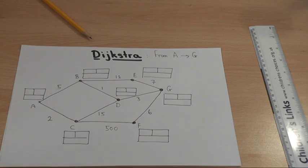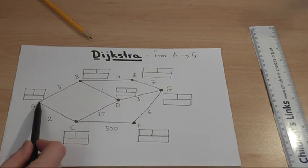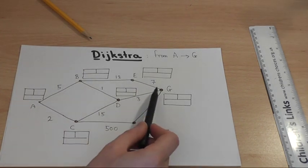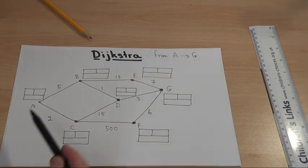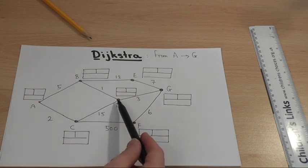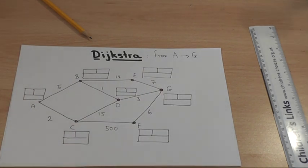Suppose I want to find the shortest route from A to G. With such a small network it can be quite obvious that the route just goes 5, 1, 3.